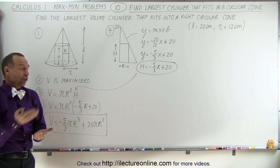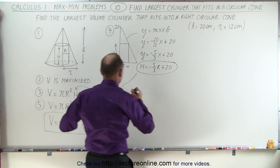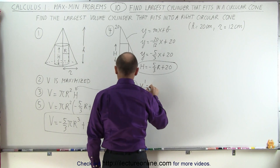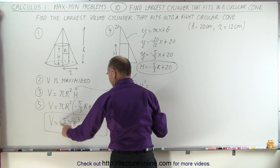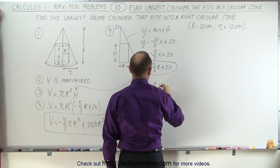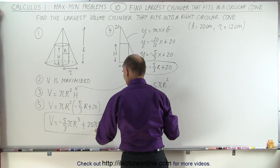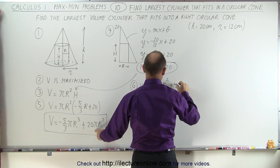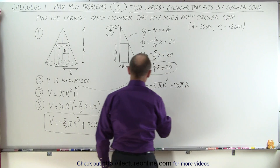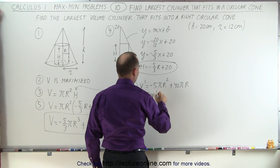The next step is to take the derivative and set that derivative equal to zero. We get V prime equal to minus 5 pi R squared plus 40 pi R.